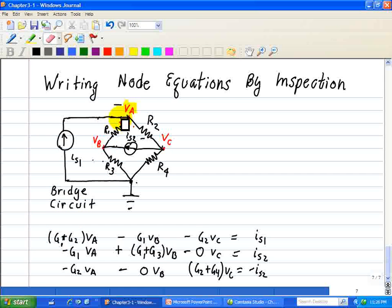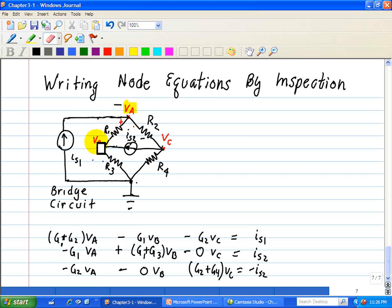Then we see what's connected to the opposite of resistor R1, and we see it's node B. So we put a minus G1 VB. We see what's connected to the opposite of R2, which is VC, so we put a minus G2 VC.